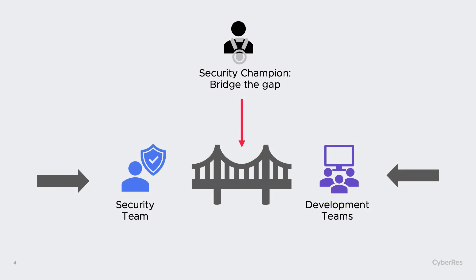Whatever you call them, here's the issue: you've got a culture of DevOps about improving the software lifecycle and reducing the complexity of maintaining software, and security needs to be part of that. Many times, security isn't part of it or seems to be out of sync with dev. Security champions can help by bringing together development and security mindsets so that the two roles can better understand each other.